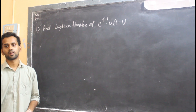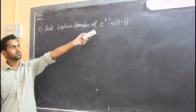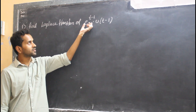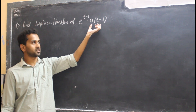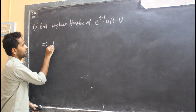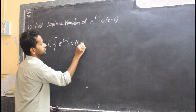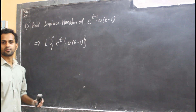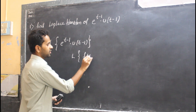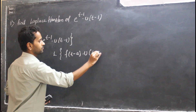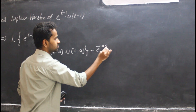First problem: find the Laplace transform of e^(t−1)·u(t − 1). Looking at it, e^(t−1) is in the form f(t − 1), and u(t − 1) is the unit step function. So this matches the standard form L{f(t − a)·u(t − a)}, which equals e^(−as)·F(s). By property 2, this equals e^(−1·s)·F(s).